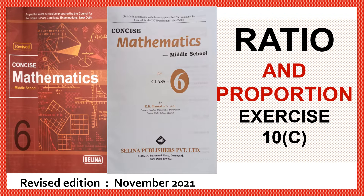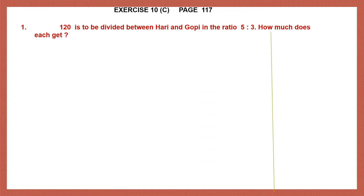Hello students, let's do ratio and proportion exercise 10C. This is found on page number 117. Question 1. 120 rupees is to be divided between Hari and Gopi in the ratio 5 is to 3. How much does each get? Let's start.